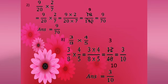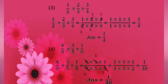Next sum: 9 by 20 into 2 by 7. Multiply numerators: 9 into 2 equals 18. Multiply denominators: 20 into 7 equals 140. Simplify 18 by 140 by finding common factors. Dividing gives 9 by 70, then further simplifying: 3 by 4 in numerator and 8 into 5 in denominator gives 3 by 10 as the answer.